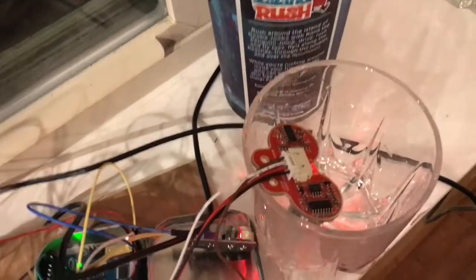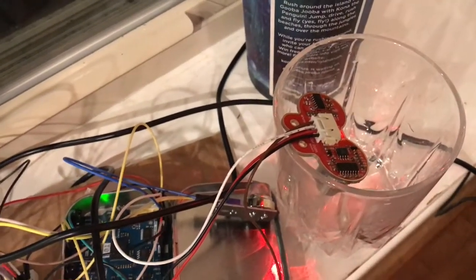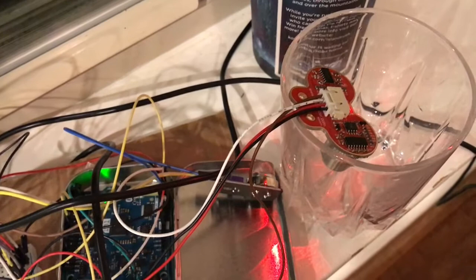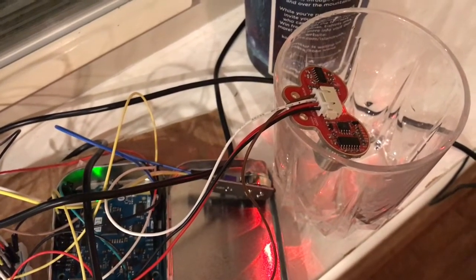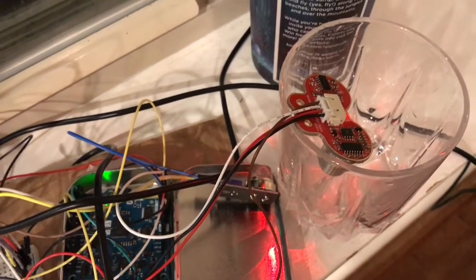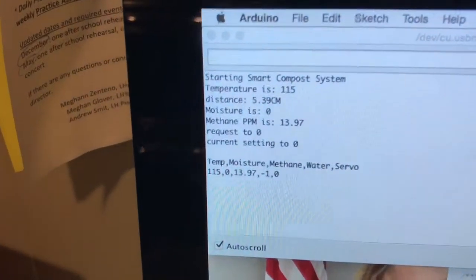And this ultrasonic finder goes on top of a rain bucket or something sitting outside of the compost, and it would let the user know if more water was needed. So all these components you see are put out here.